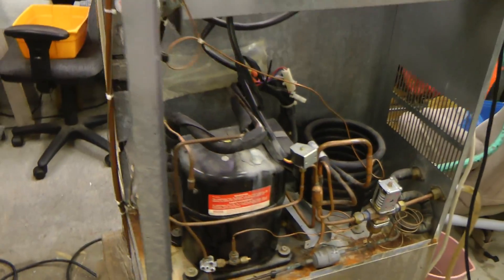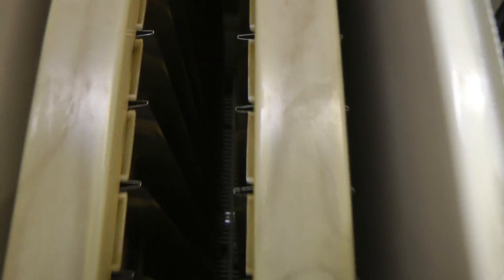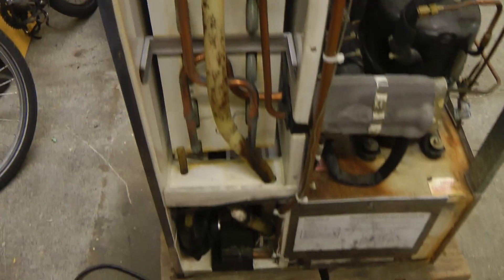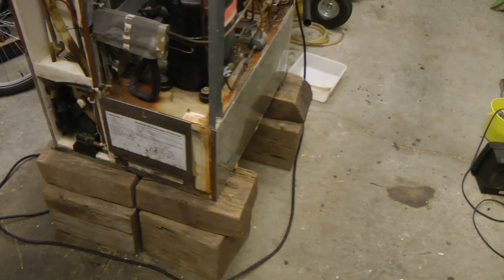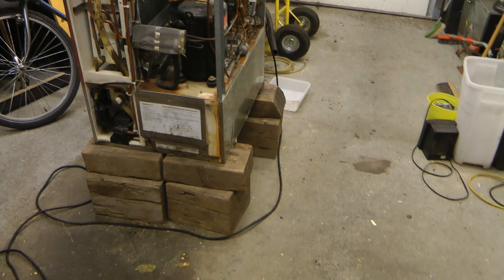It's basically just a refrigeration system and it cools these plates in here that have water flowing on them and this produces ice which then falls down into a large bin that was below this. The bin would have been about the size bigger than a full-size refrigerator.